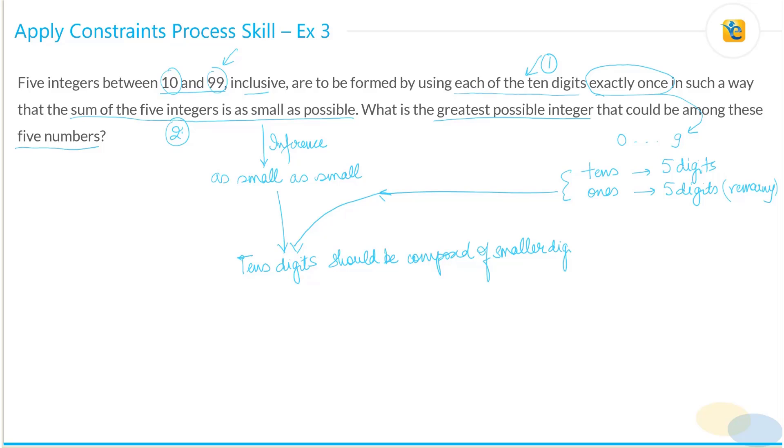Which means, out of zero to nine, what are the smallest digits? Zero, one, two, three, four. So these digits should be our tens digit.